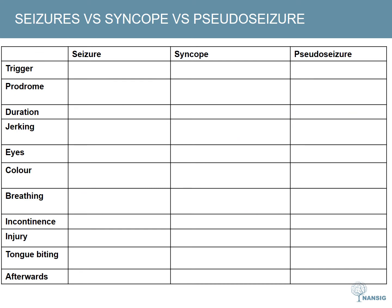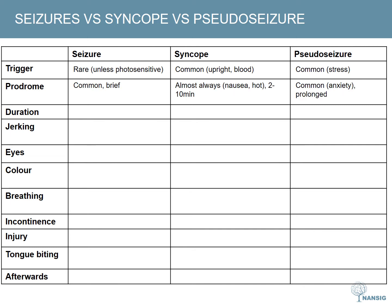It's often difficult to tell seizures apart from pseudo-seizures and syncope. This grid gives a few pointers towards these differences to help you in your clinical practice. Seizures rarely have a trigger unless caused by something like light, whereas syncope often has a trigger such as blood or being stood upright. Pseudo-seizures can also have a trigger such as stress. All three tend to have a prodrome — in seizures this is very brief whilst in pseudo-seizures this is prolonged.